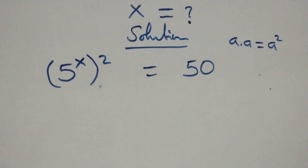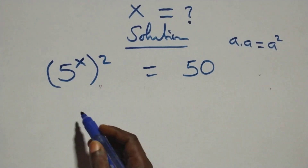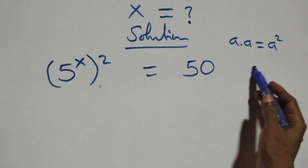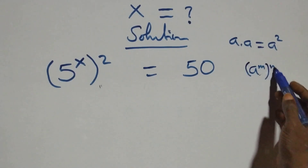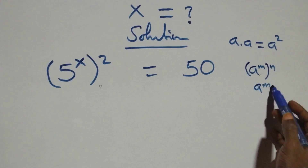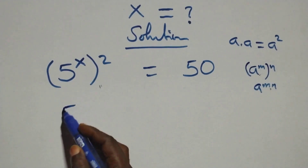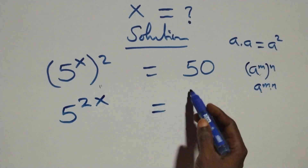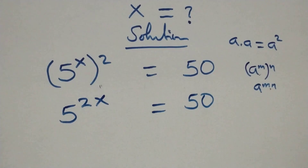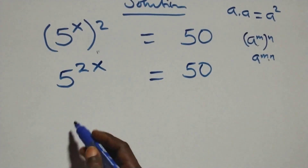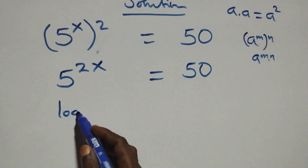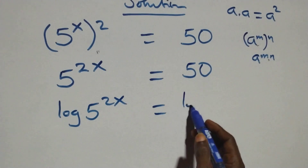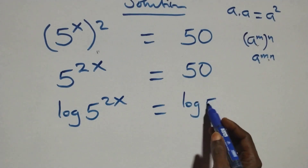The next step here: this also follows when we have a raised to power n, raised to power m, which is the same as a raised to power mn. So this becomes 5 raised to power 2x equals 50. Then we take the log on both sides, giving us log of 5 raised to power 2x equals log 50.